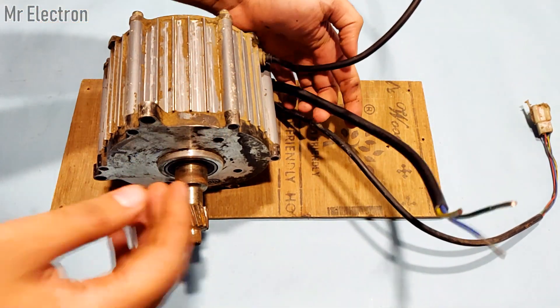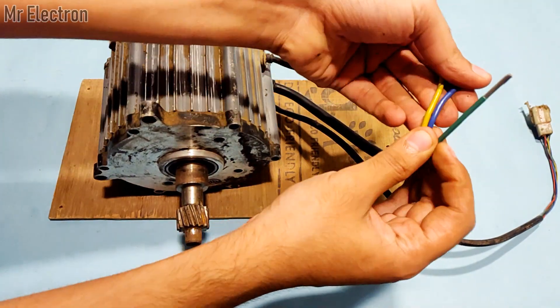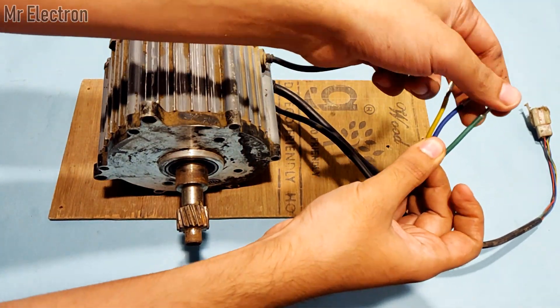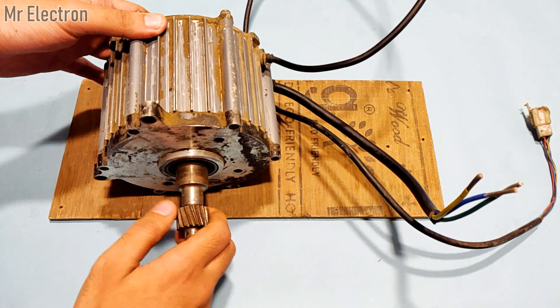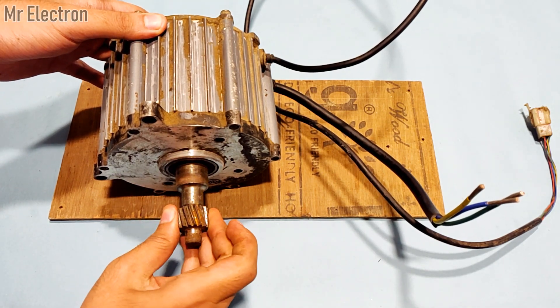You can see that this one has two cables. The thicker cable contains three wires that are for running the BLDC motor, and the inner cable is for controlling and sensing.